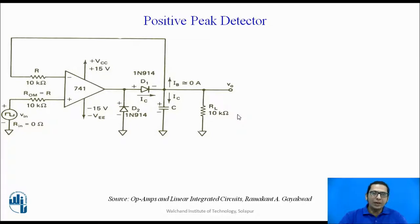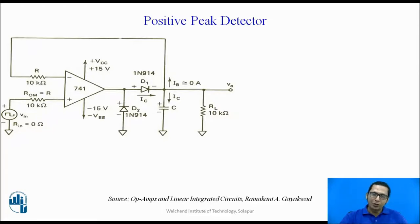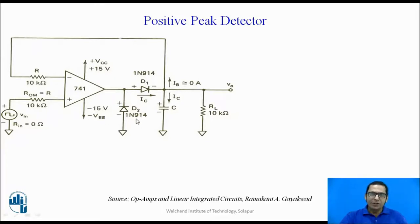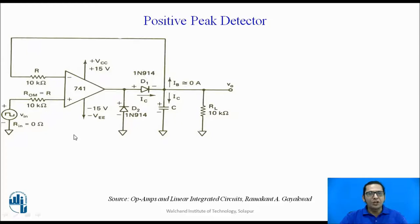There can be two types of peak detectors. One is a positive peak detector, which always detects the positive peak of the input signal. The other is a negative peak detector, whose output is the negative peak value of the input signal. This simple circuit describes the positive peak detector, designed using an operational amplifier and a few components.